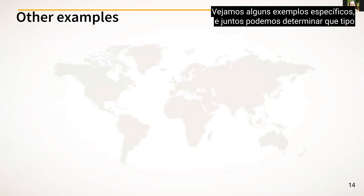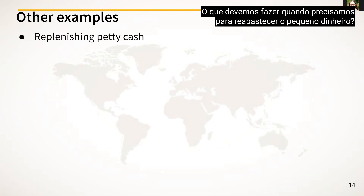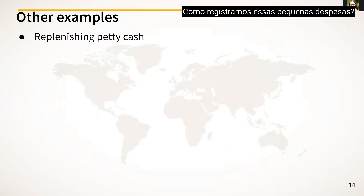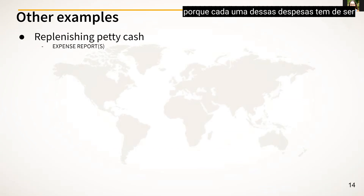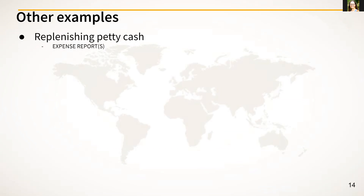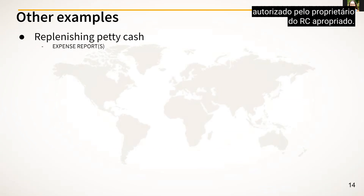Let's look at some specific examples and determine together what type of screen or journal entry to use for each situation. What should we do when we need to replenish the petty cash and record those small expenses? We should use an expense report — or multiple expense reports if there are multiple responsibility centers — because each of those expenses needs to be authorized by the appropriate RC owner.